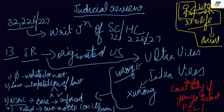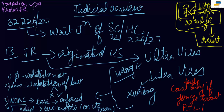Judicial review has key functions: it reviews whether the government's action was right or wrong; it protects fundamental rights; it maintains the supremacy of the Constitution; it maintains federalism; and it ensures that the government does not exceed its given mandate.